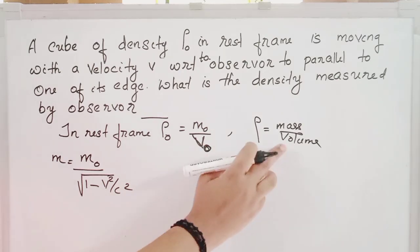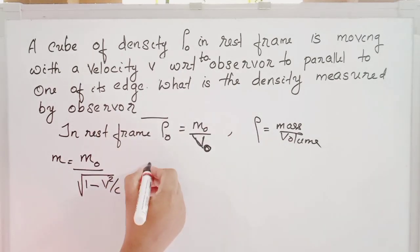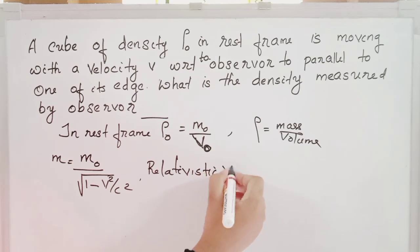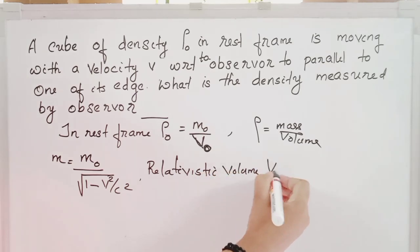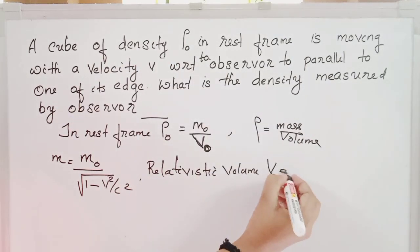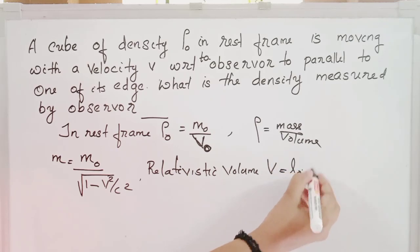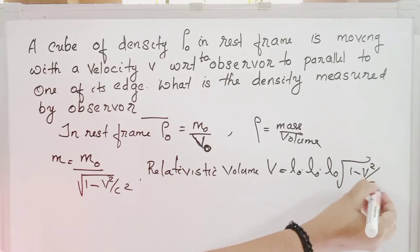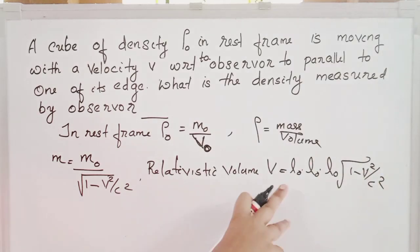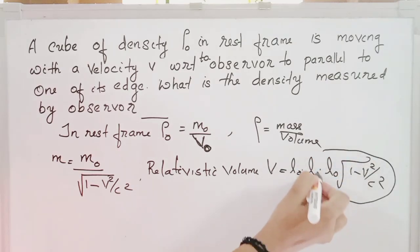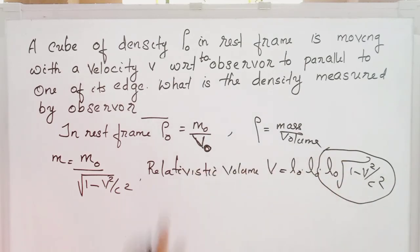We have to find the relativistic volume. The relativistic volume is equal to L₀ into L₀ into L₀ into the square root of (1 minus v² by c²), because length contraction occurs only in the direction of motion.